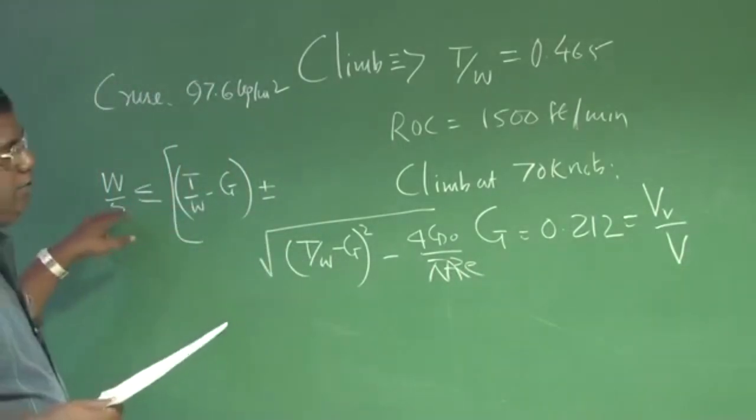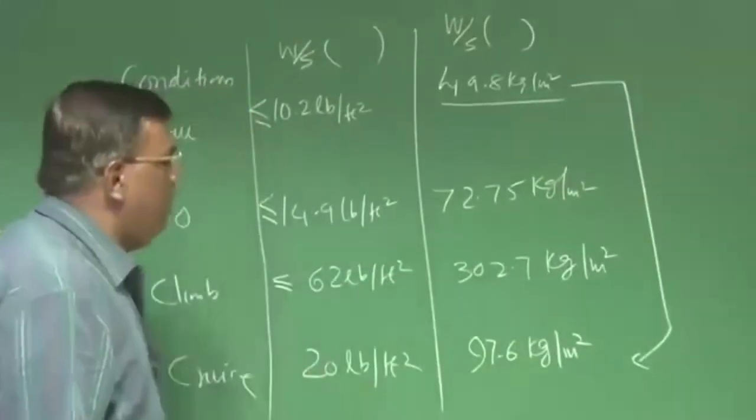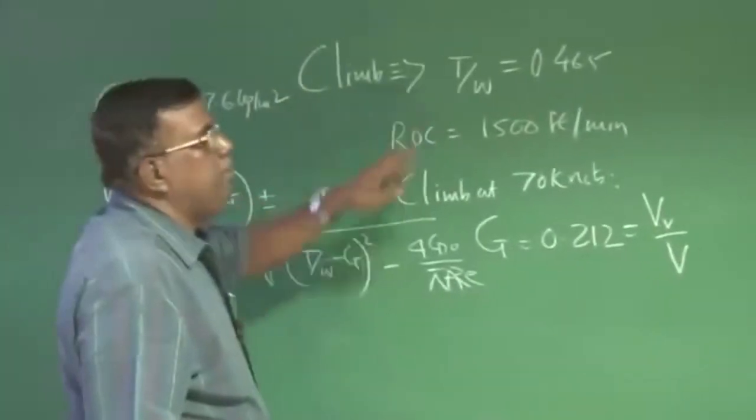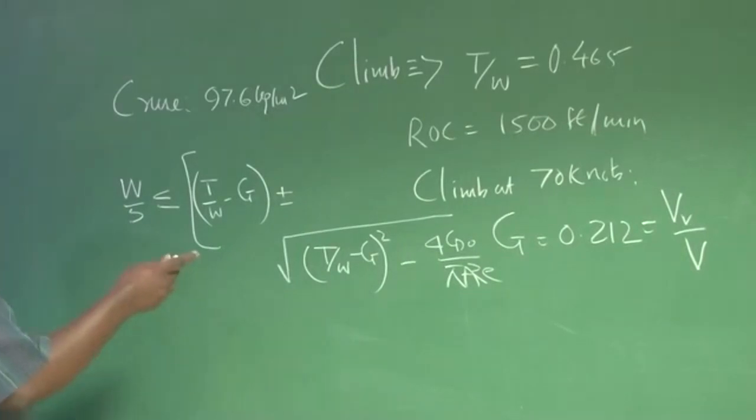This W by S of 302.7 kg per meter square, we got by taking T by W at 0.465. So now, if I put W by S as 97.6, because that if I am choosing, which may be around 100, I told you, when I convert back to takeoff conditions, then of course this I have to multiply by 9.8 to make a Newton per meter square, to be consistent with the unit.